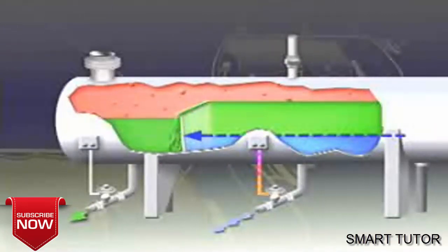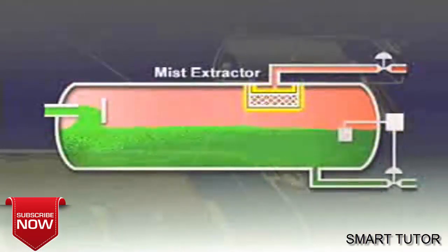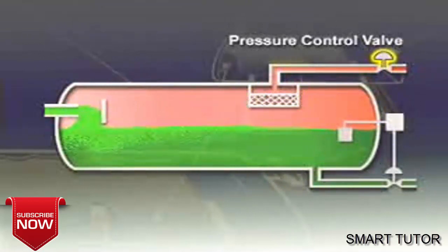The gas flows horizontally and exits through a mist extractor to a pressure control valve which maintains constant vessel pressure.